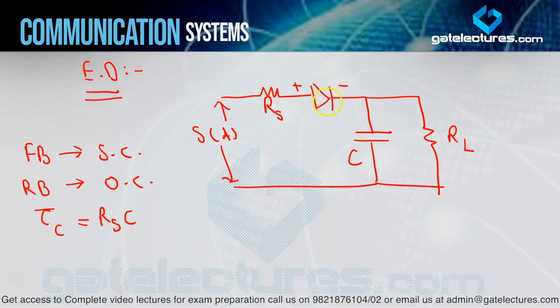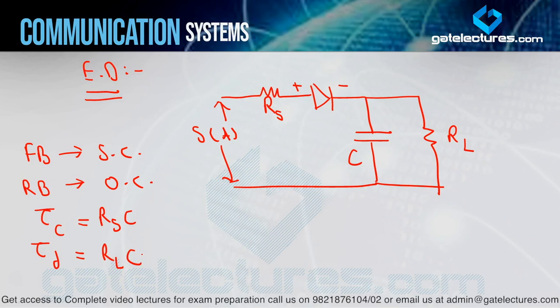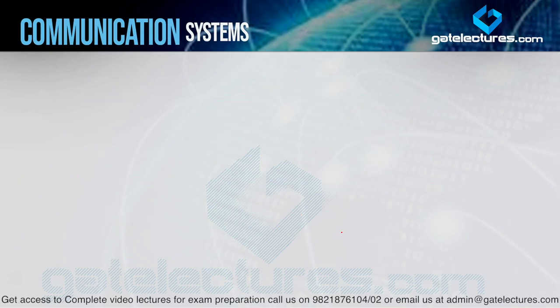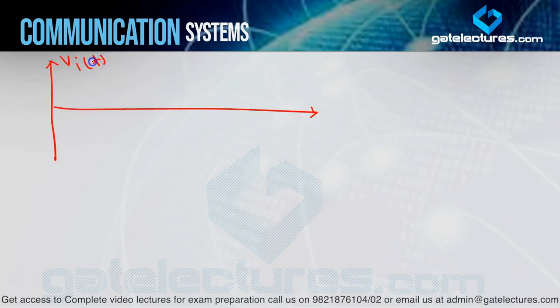If the diode is open circuit, the capacitor will be discharged via the load resistor RL. The discharging time constant will be RL into C. Ideally, the charging time constant should be less than the discharging time constant.